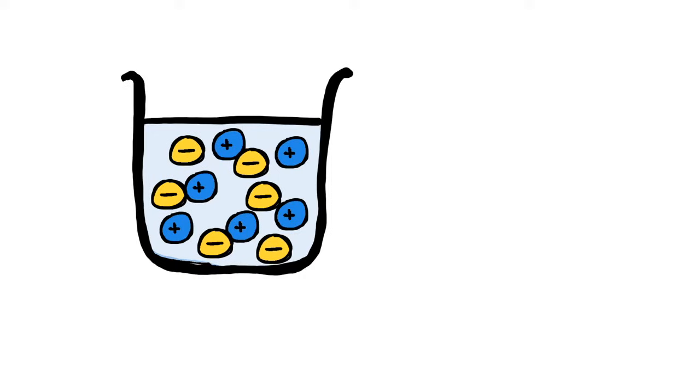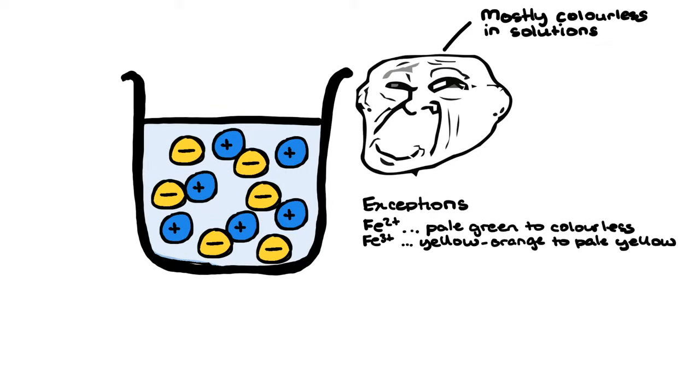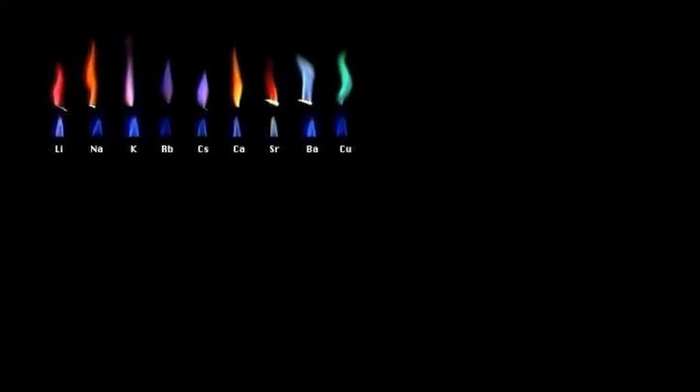However, identifying unknown cations in aqueous solutions tends to be problematic as most are colorless in solution, with the exception of iron 2, iron 3, and copper ions. If these solutions are put through a flame test, many metal cations produce characteristic colors when they're subjected to a blue Bunsen flame.